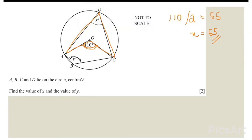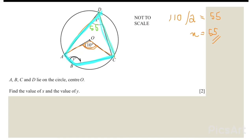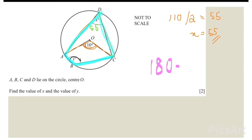Then we have to find y. This whole shape is a cyclic quadrilateral, which means all four points are touching the circumference — that's why it's called a cyclic quadrilateral. We already know x is 55 degrees. In a cyclic quadrilateral, opposite angles add up to 180 degrees, so we do 180 minus 55, which gives 125. So y equals 125 degrees.